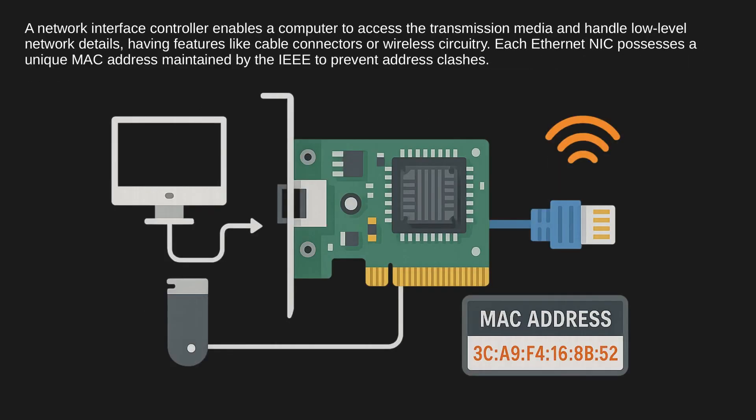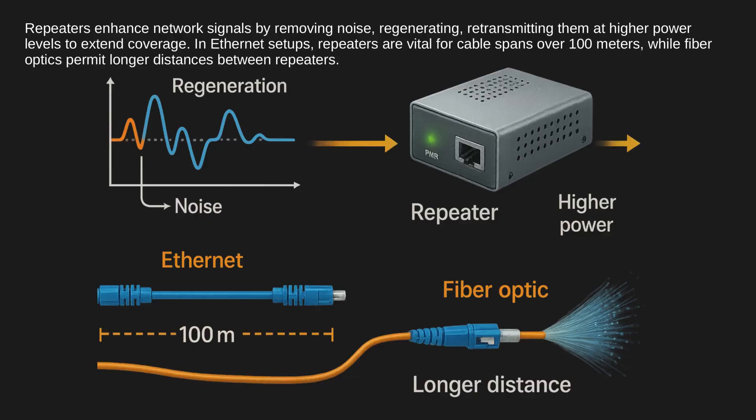A network interface controller enables a computer to access the transmission media and handle low-level network details, having features like cable connectors or wireless circuitry. Each Ethernet NIC possesses a unique MAC address maintained by the IEEE to prevent address clashes. Repeaters enhance network signals by removing noise, regenerating and retransmitting them at higher power levels to extend coverage. In Ethernet setups, repeaters are vital for cable spans over 100 meters, while fiber optics permit longer distances between repeaters.